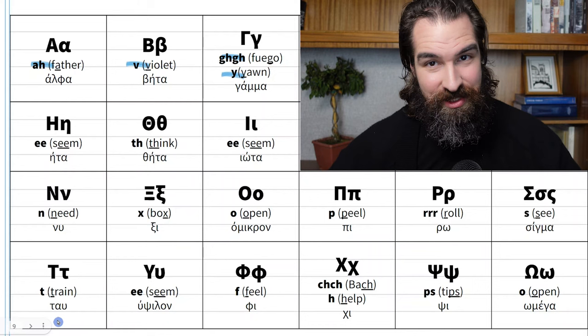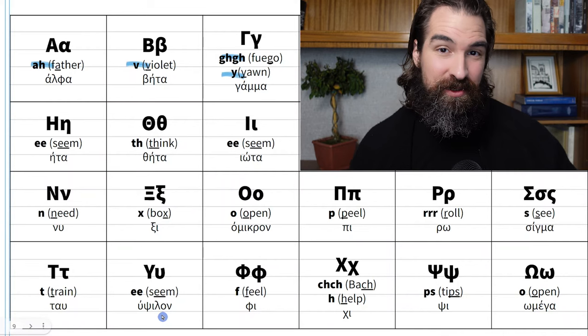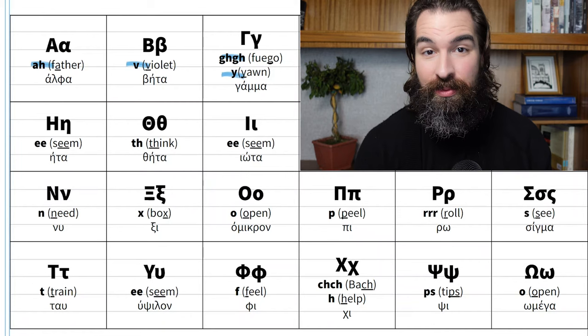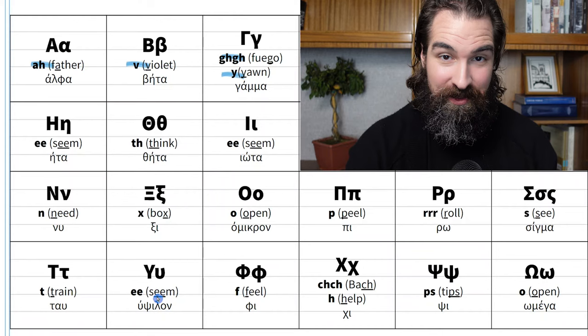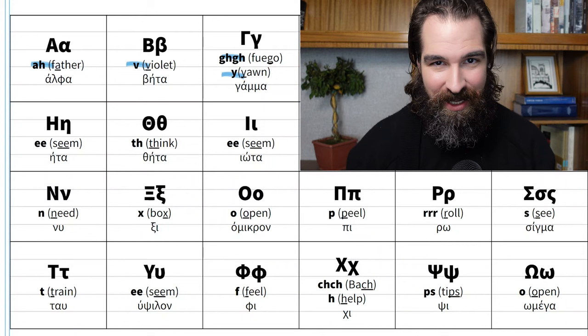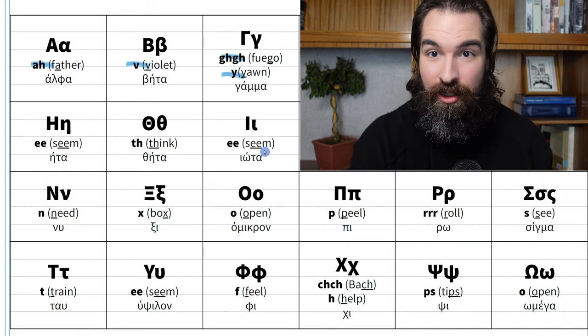Next we have tau. Looks like a T and sounds like a T. Then ypsilon — it looks like an uppercase Y or a lowercase U, and it is the third way Greeks can make a long E sound. We had eta, iota, and ypsilon — three letters all making an E sound. This is why Greeks who aren't educated make spelling mistakes: if something makes an E sound, you don't know whether to write eta, iota, or ypsilon.